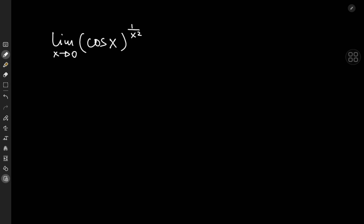Well, let me translate this limit into another limit of something approaching infinity. I can do that by letting x equal 1 by u. So this means I have the limit as u approaches infinity of cosine 1 by u to the u squared.